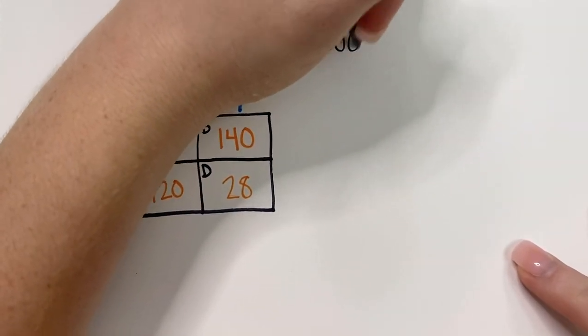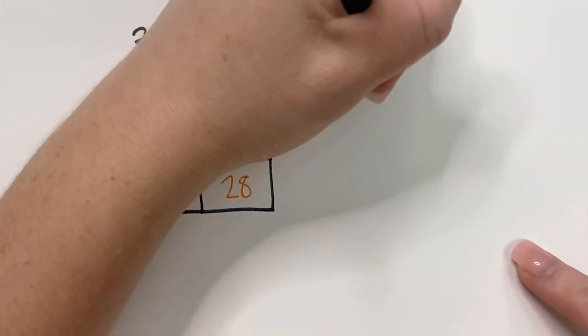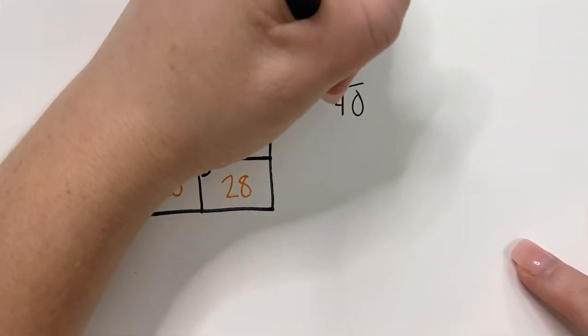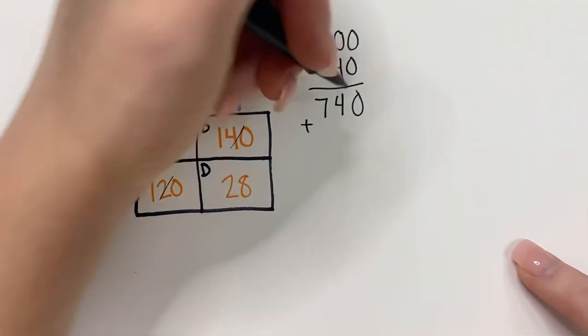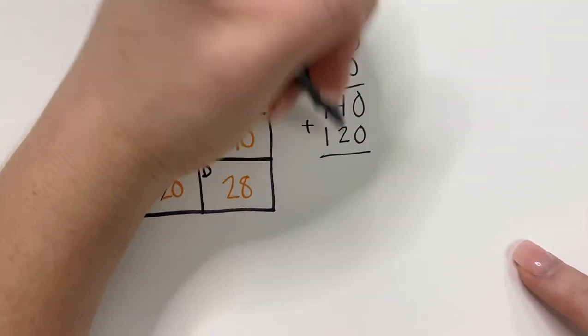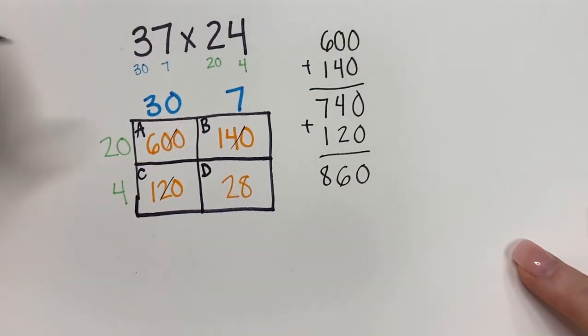So, I have 600 plus 140. So, I finished that one. I finished that one. Now, 120. And last but not least, 28.